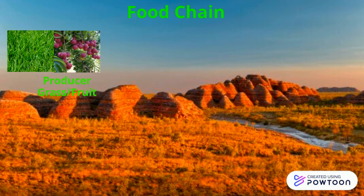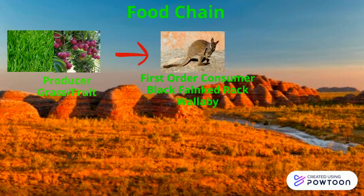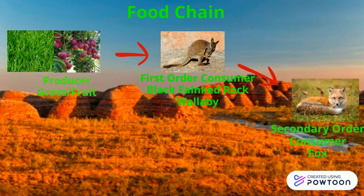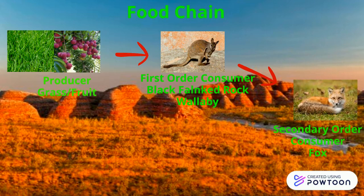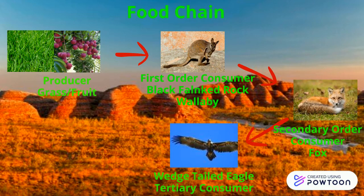The food chain: the producer — grass and fruit — is eaten by the first-order consumer, the Black-Flanked Rock Wallaby. That is then eaten by the secondary-order consumer, the fox. The fox is eaten by the tertiary consumer, the wedge-tailed eagle. That dies and is broken down by the decomposers, which are then used for nutrients for the producers.